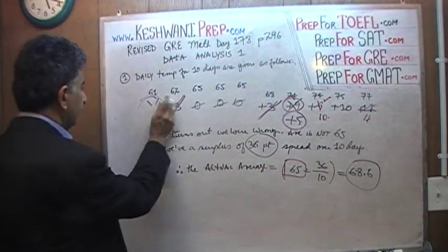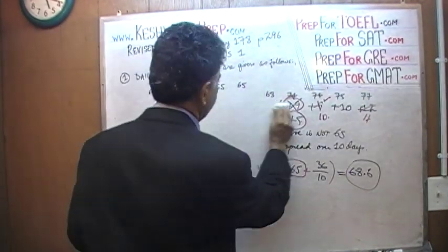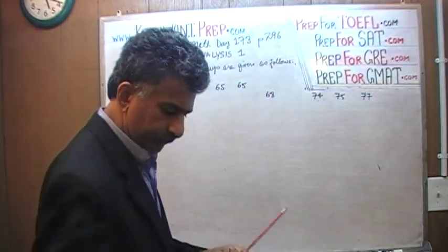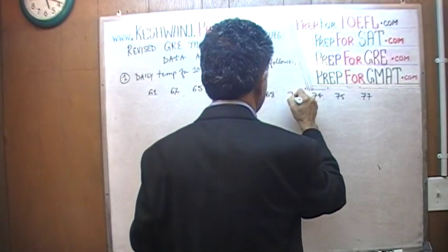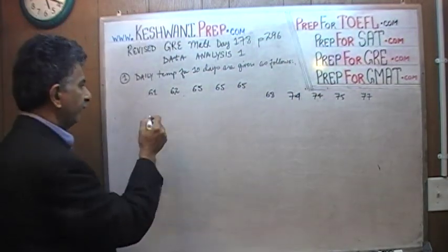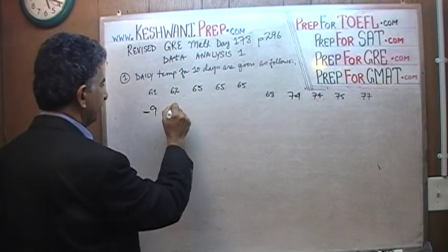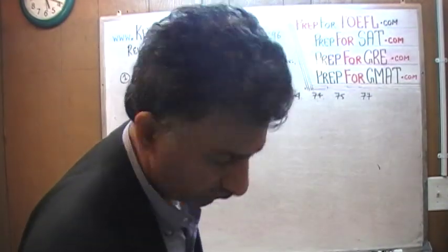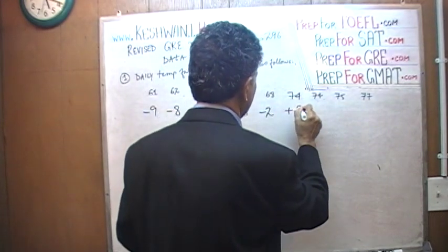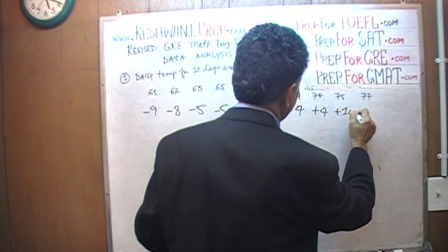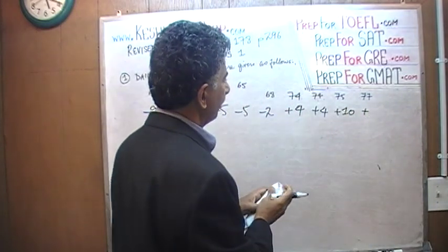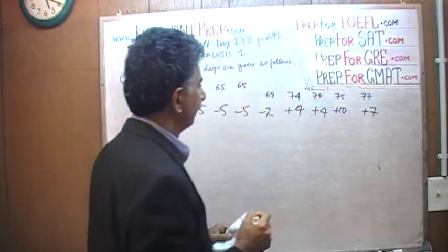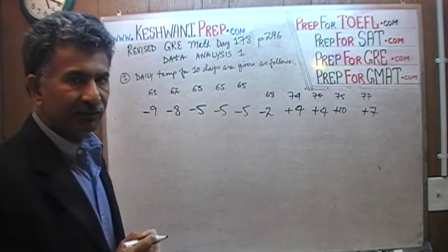Let's do it again — this time I'm not going to explain anything, just do it so you can see in real time how long it takes. Time me if you like. This was a 74, I have to rewrite it. So let's see what happens. I'm going to pretend the overall average is 70. So this is 9 short, this is 8 short, this is 5 short, 5 short, 5 short, 5 short. This is 2 short. This is 4 surplus, a surplus of 10, and a surplus of 7 more, and this is 10 more.